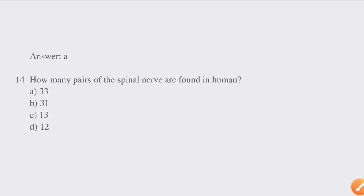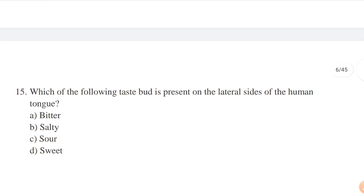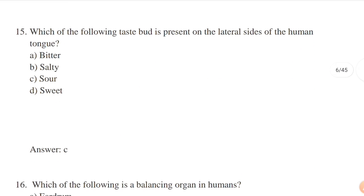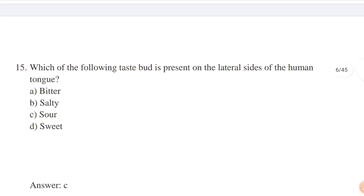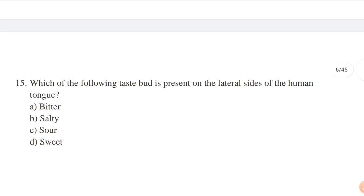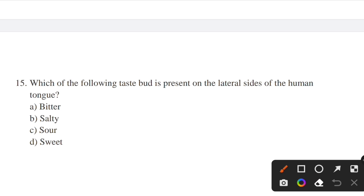Which taste bud is present on the lateral sides of the human tongue? Options: bitter, salty, sour, sweet. Answer: option C — sour. Generally, humans can perceive four basic taste modalities: sweet, sour, salty, and bitter.